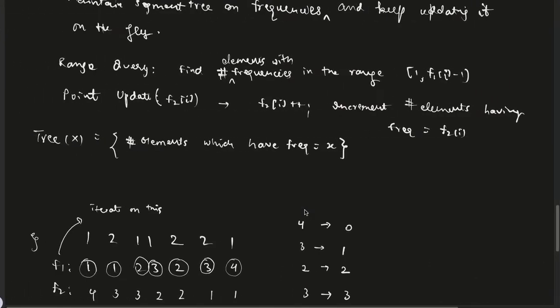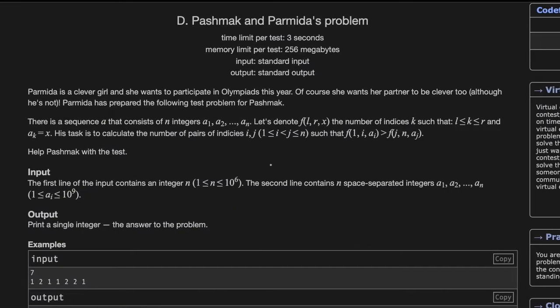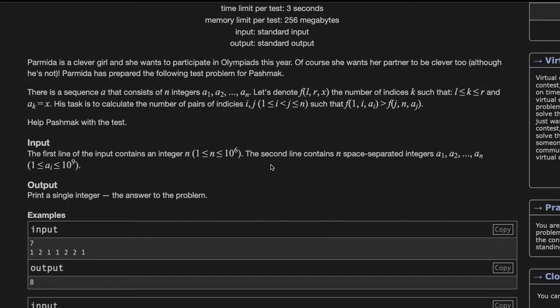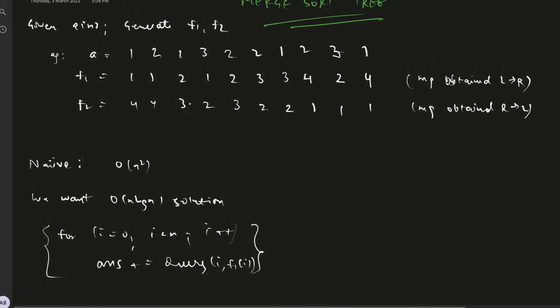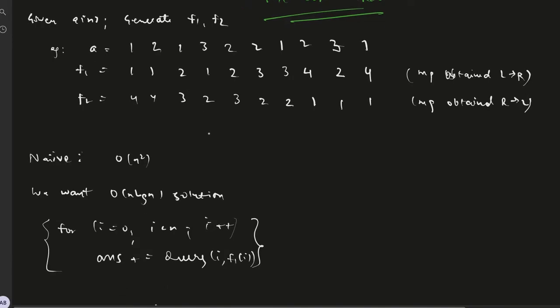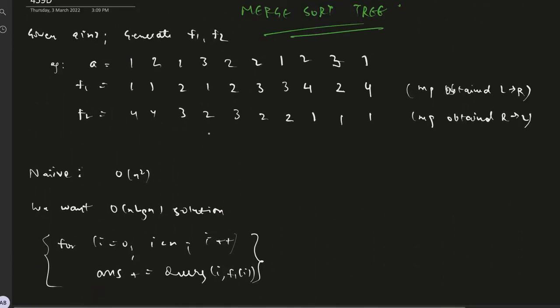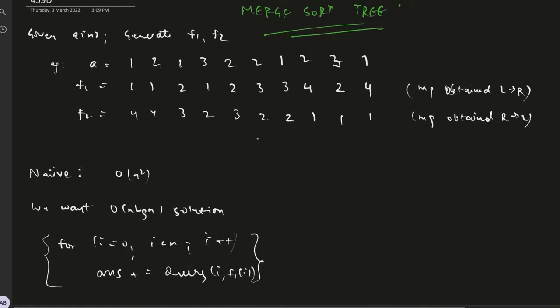Using merge sort tree, we can - okay, so merge sort tree. We maintain a - for every - in a segment tree, a merge sort tree is a segment tree where every node stores a vector corresponding to all the elements that it represents. The way we solve this question is suppose this is the example given to us.